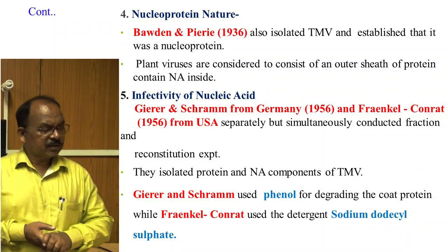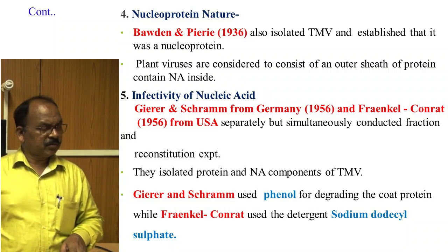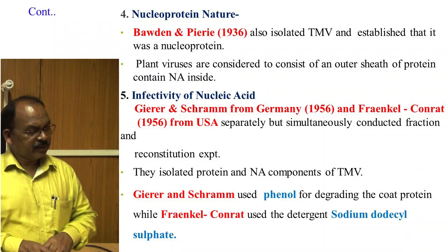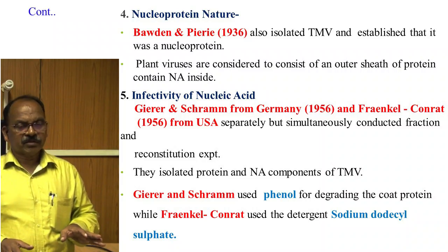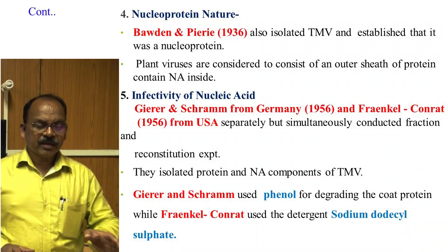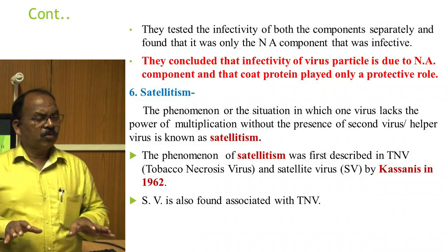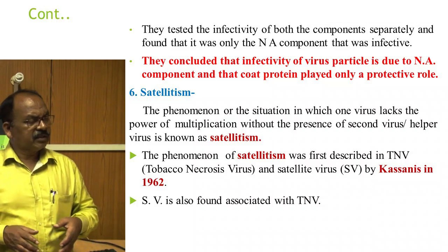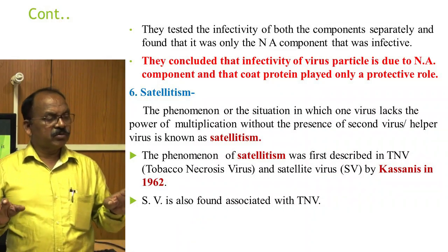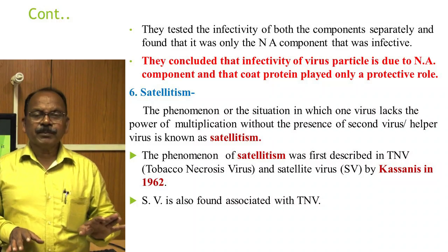Infectivity of Nucleic Acid: Gierer and Schramm from Germany in 1956 and Fraenkel-Conrat from the USA in 1956 separately but simultaneously conducted fractionation and reconstitution experiments. They isolated the protein and nucleic acid components of Tobacco Mosaic Virus — Gierer and Schramm used phenol for degrading the protein coat, while Fraenkel-Conrat used the detergent sodium dodecyl sulfate. They tested the infectivity of both components separately and found that only the nucleic acid component was infective, concluding that coat protein plays only a protective role.